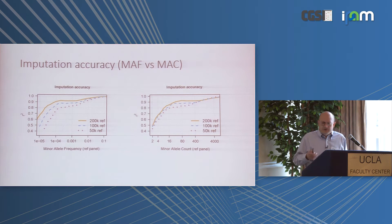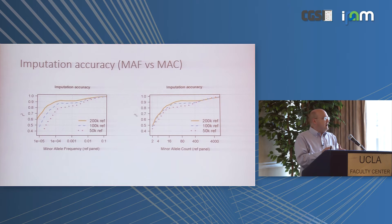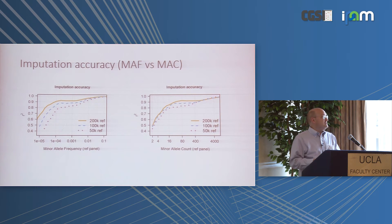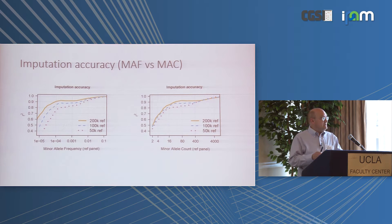Every time you double the reference panel size, the frequency of variants you can impute cuts in half — it's roughly a linear relationship. So if you could impute markers with at least 20 copies of the minor allele with a certain reference panel size, when you double it, you can impute markers with 10 copies at the same accuracy.